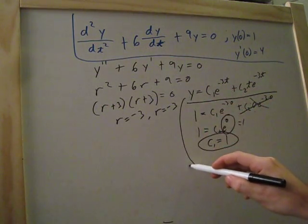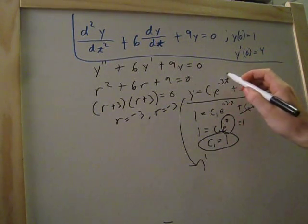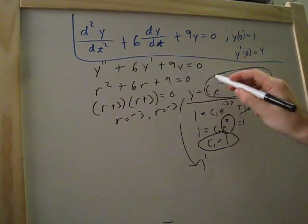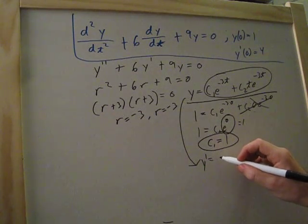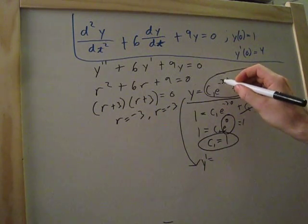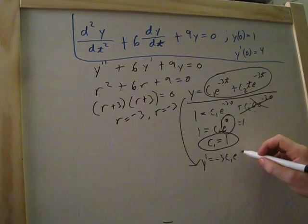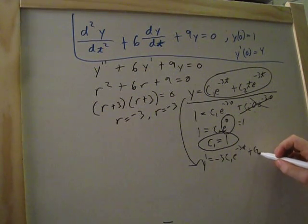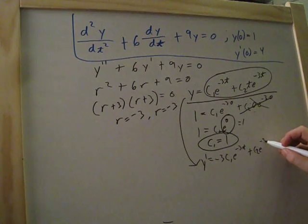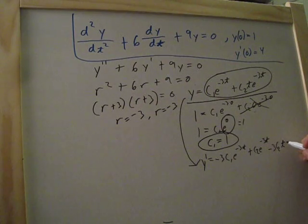So then we'll take this down here, and we'll do y prime. So we'll take the derivative of this. With that, we're going to get, we'll bring this negative 3 down. So it'll be negative 3, c1 e to the negative 3t, and then we'll add c2 e to the 3t minus 3c2 te to the negative 3t.